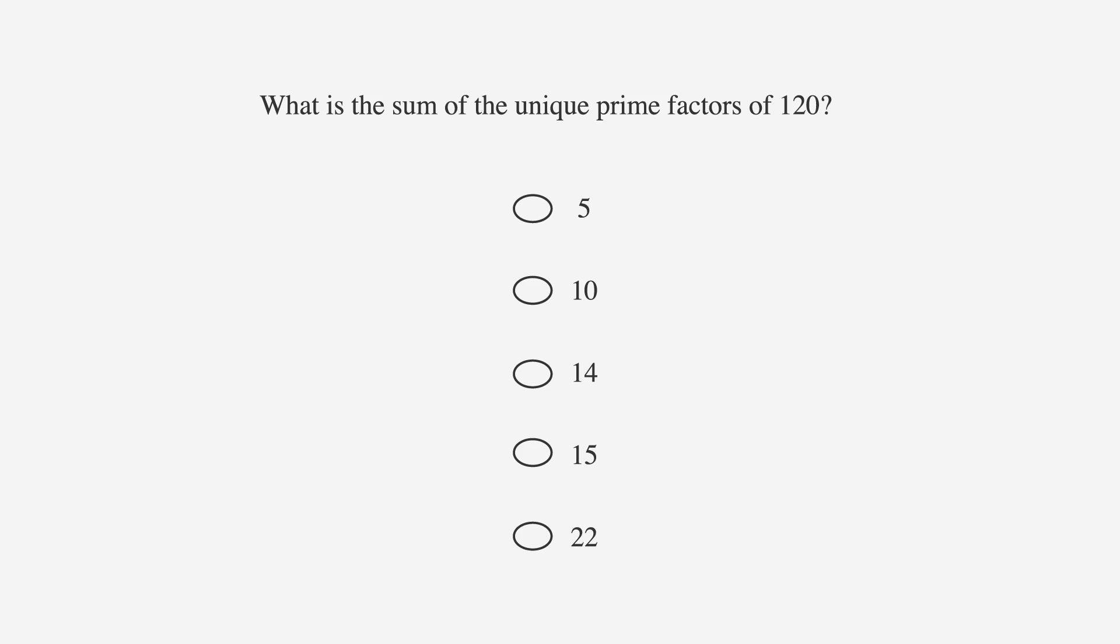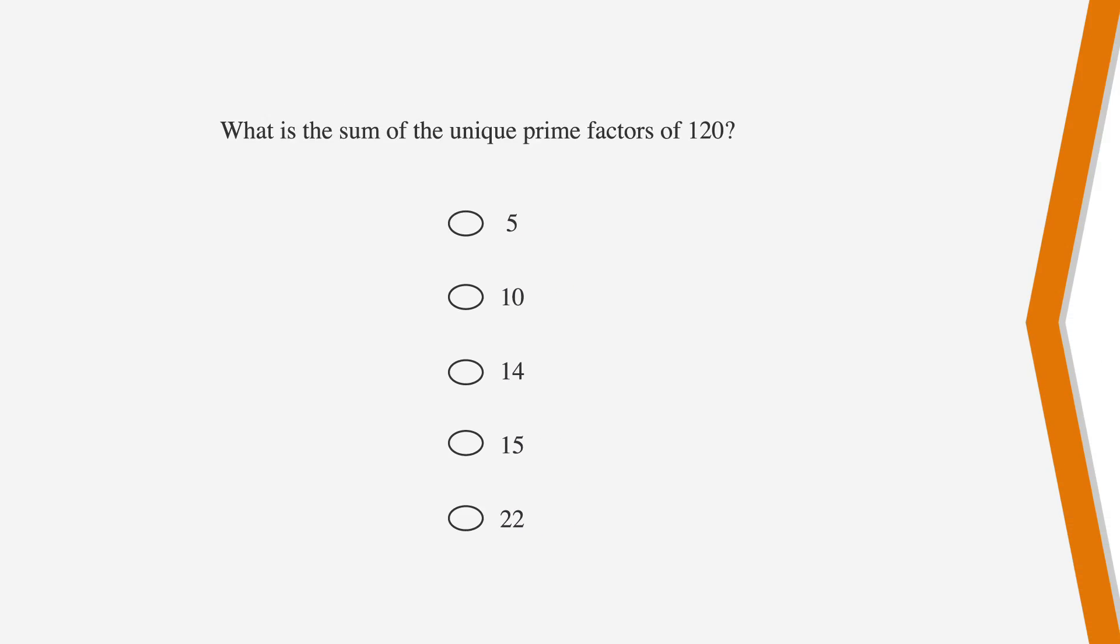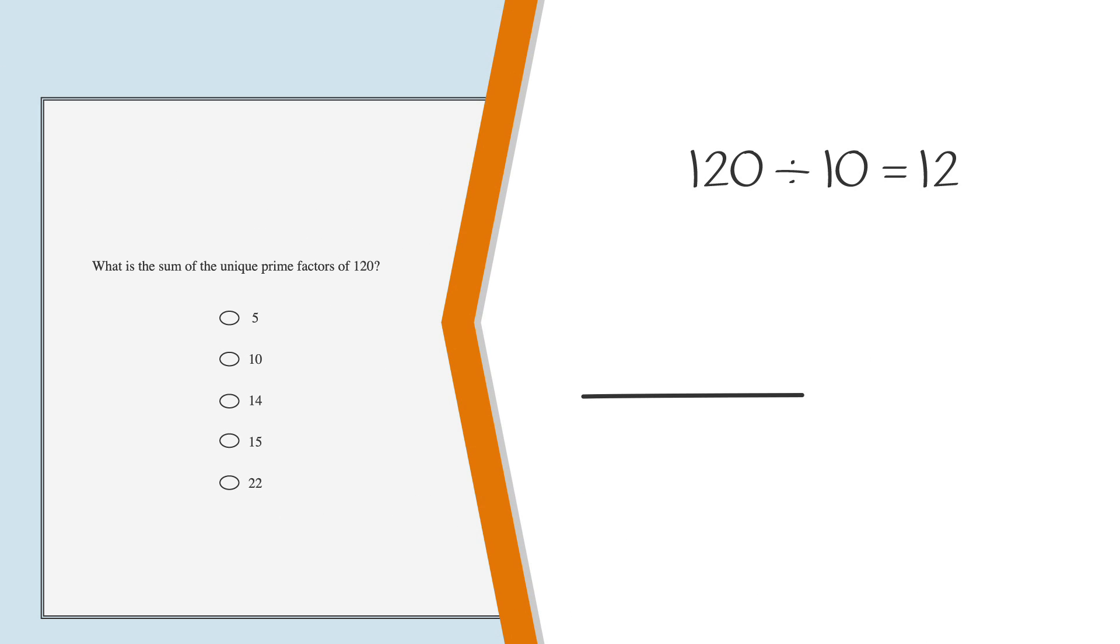Okay, let's pull all this together to solve a GRE-style problem. What is the sum of the unique prime factors of 120? Our choices are 5, 10, 14, 15, and 22. 120 divided by 10 is 12, so our factor pair is 10 times 12.